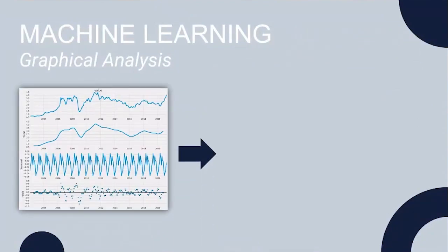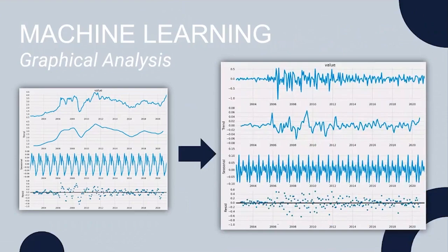After differencing the data by a factor of one, the data became more stable and the trend had a mean of zero, so we were ready to implement the model.